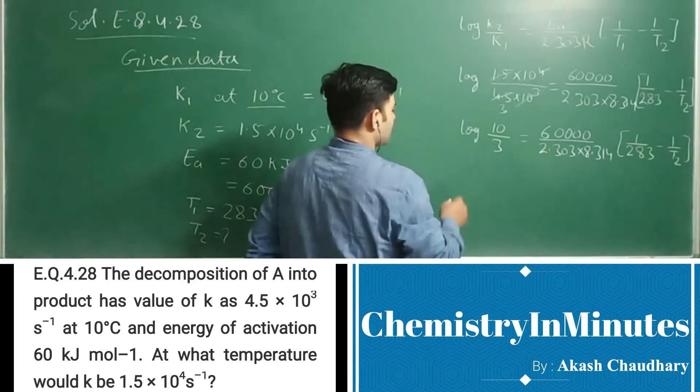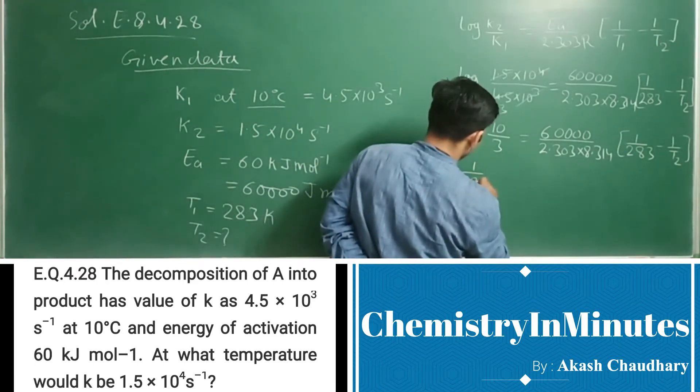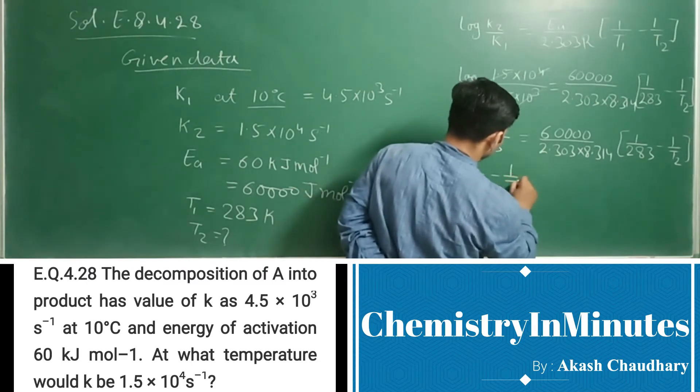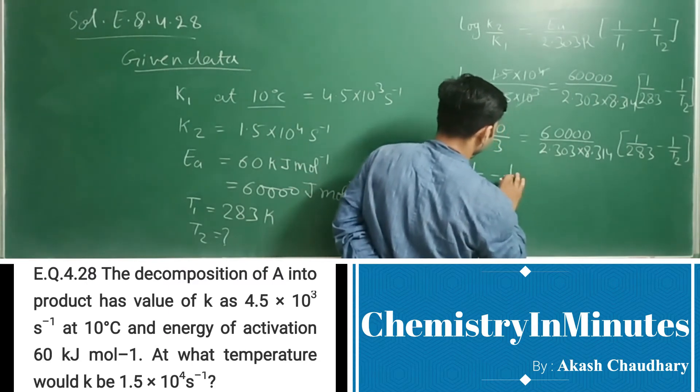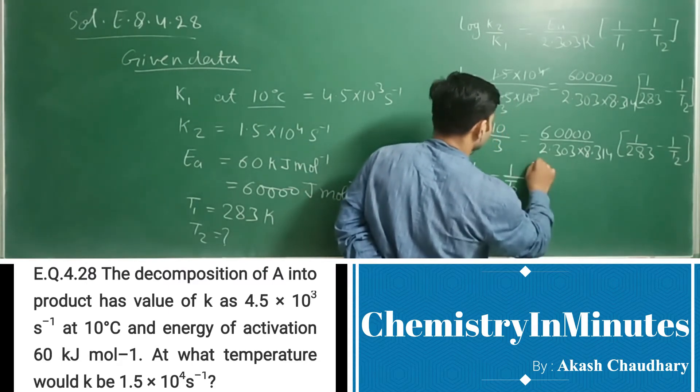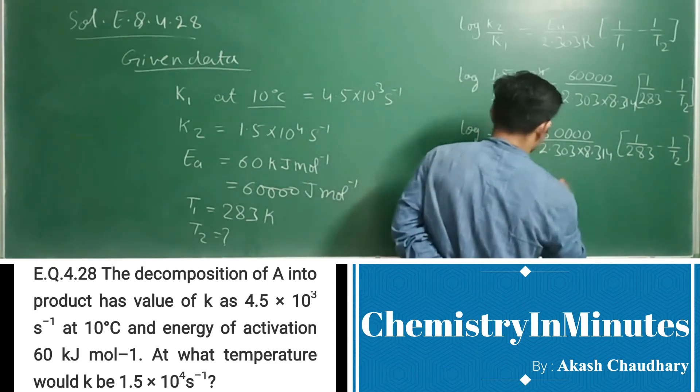From here, 1/283 minus 1/T2 can be rearranged.